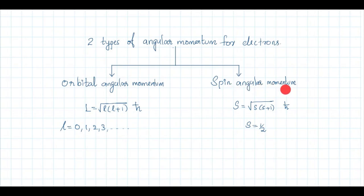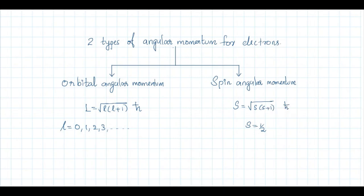The magnitude of orbital angular momentum is given by capital L = sqrt(l(l+1)) ħ, where small l represents the orbital angular momentum quantum number; it can take values 0, 1, 2, 3, etc. Spin angular momentum is the second type, given by S = sqrt(s(s+1)) ħ, where small s is the spin angular momentum quantum number, and for an electron its value is 1/2.